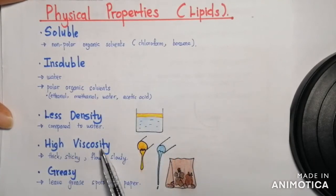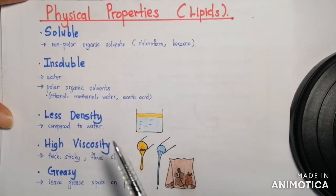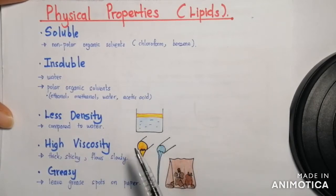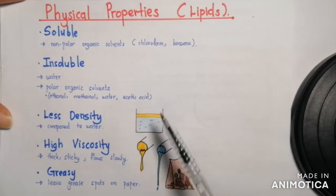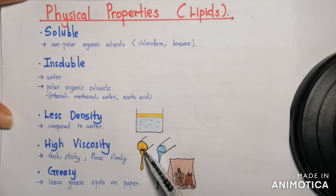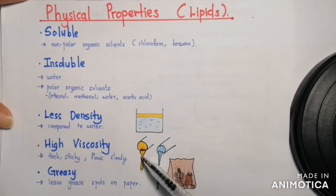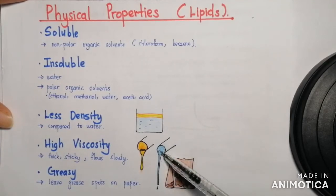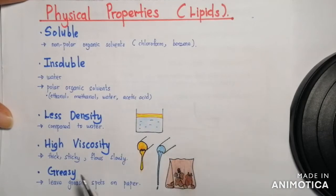Lipids also have high viscosity — viscosity means the resistance of a fluid to flow. So if it has high viscosity, the fluid is sticky and flows slowly. For example, oil has high viscosity because it is thick and flows slowly compared to water, which flows quickly and has less viscosity. And also, lipids leave grease spots on paper — they are greasy.